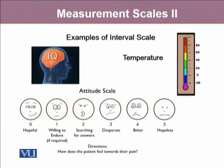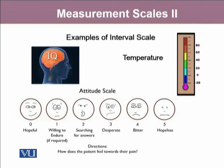For example, in temperature, whenever the temperature goes to zero degrees Celsius, this does not mean that heat is no more — heat is still there, it's just we can't feel it that way. When we talk about IQ of a person, having a zero IQ does not mean a person doesn't have a brain or cannot think. It just means it's not measured on the scale we are using. Similarly, attitude scales ranging from hopeful to hopeless are also interval scales.